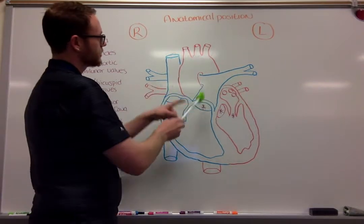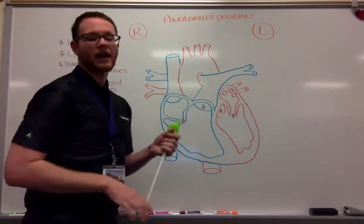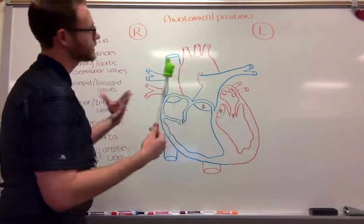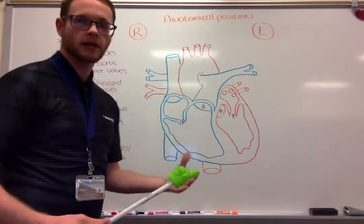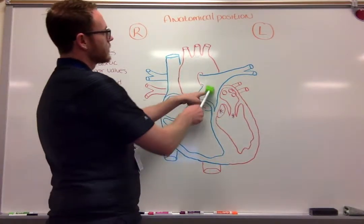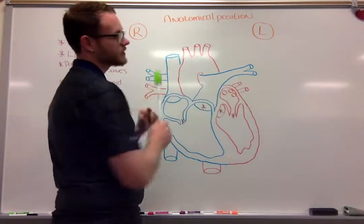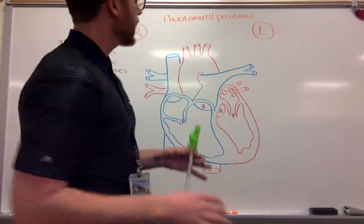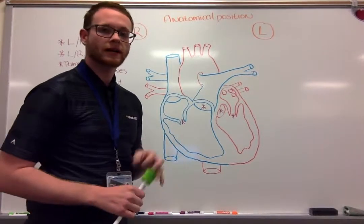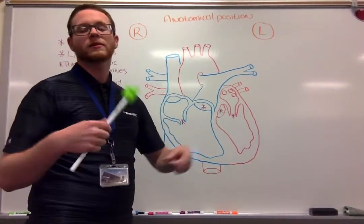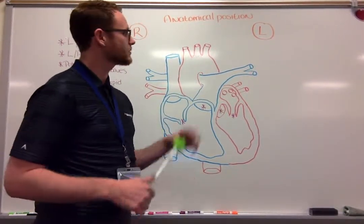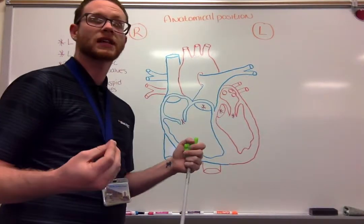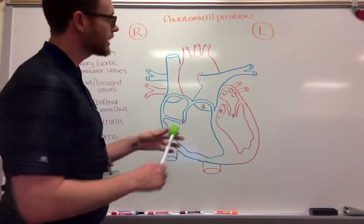That is going to go out through our left and right pulmonary arteries. As we know, arteries take blood away from the heart. So pulmonary trunk, left and right pulmonary arteries — that is going to take it to pulmonary circulation, through the process of exchanging gases with the capillaries and the lungs on the alveoli or alveolar sacs.